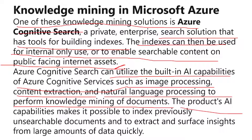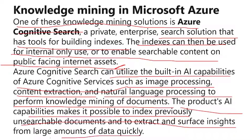The product's artificial intelligence capabilities make it possible to index previously unsearchable documents and to extract and surface insights from large amounts of data quickly. From large data, you can immediately get the information you need. There is a lot of information available, but you may not need all of it — you may only need specific information. If you ask for specific information, the artificial intelligence system will be able to produce that particular information for you.